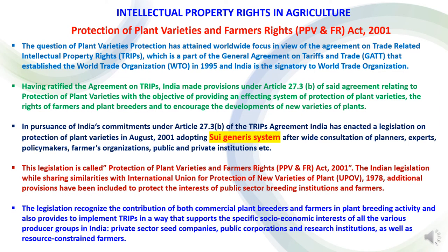Now to study intellectual property rights in agriculture. In India, there is the Protection of Plant Varieties and Farmers Rights Act 2001. The question of plant varieties protection has attained worldwide focus in view of the Agreement on Trade-Related Intellectual Property Rights, known as TRIPS, which is a part of the General Agreement on Tariffs and Trade, GATT, that established the World Trade Organization, WTO, in 1995. India is a signatory to the World Trade Organization.